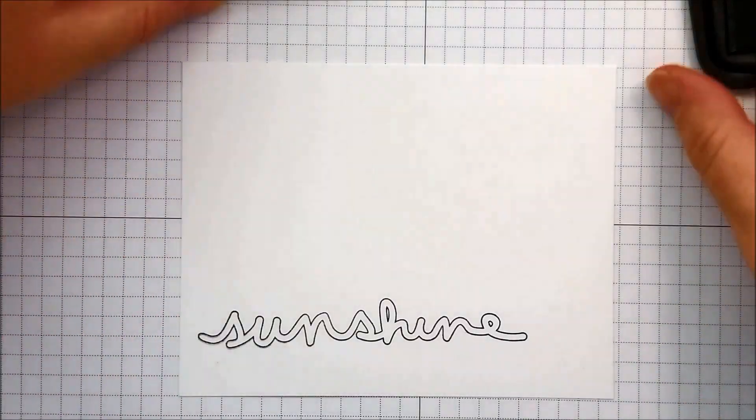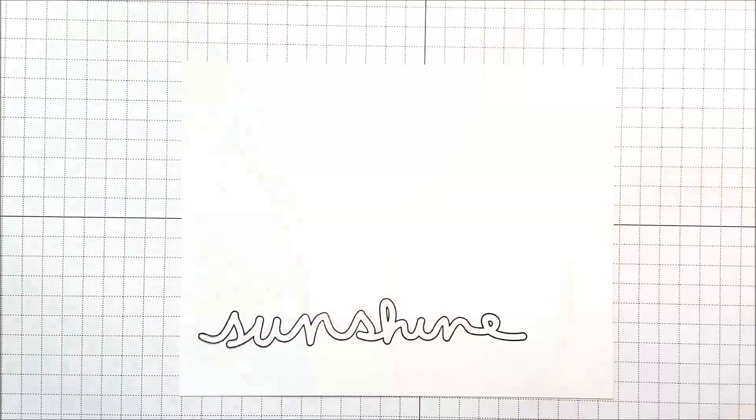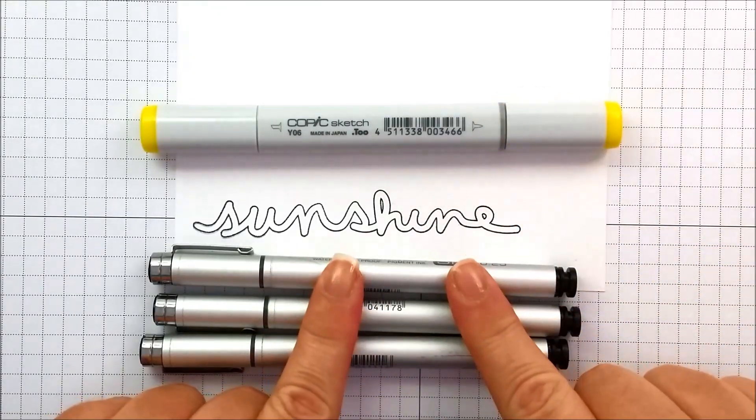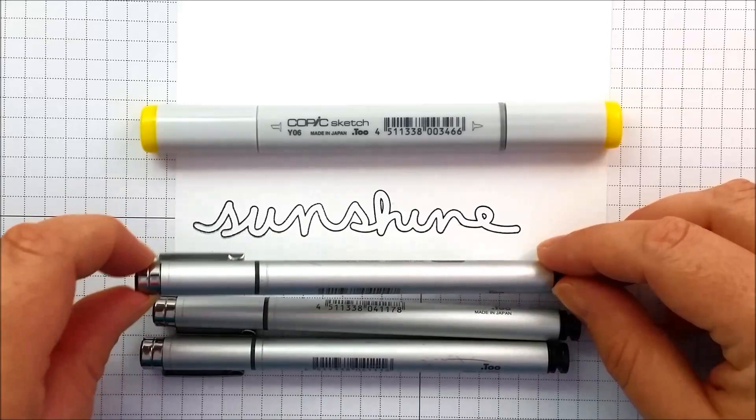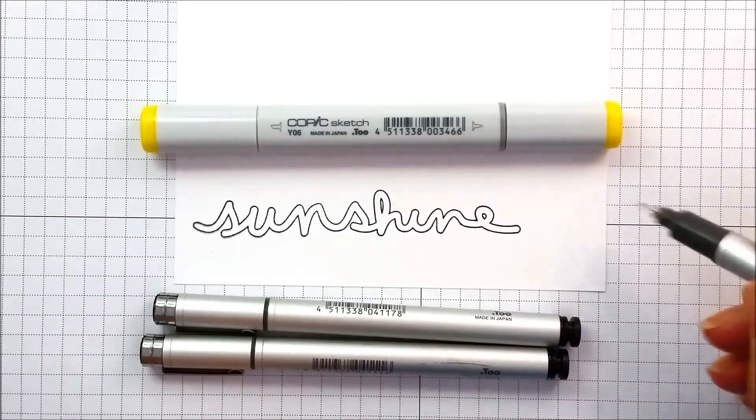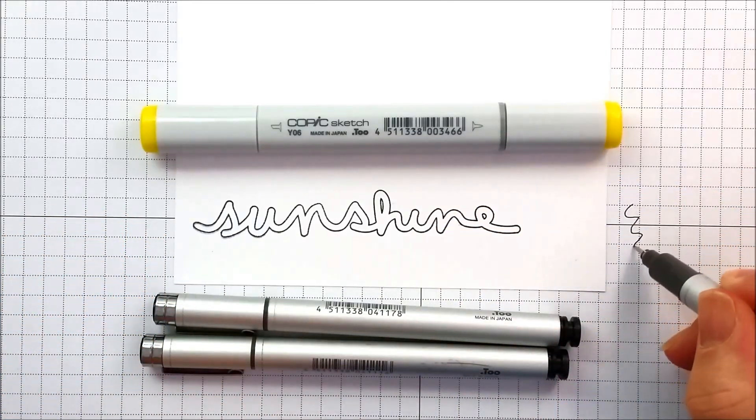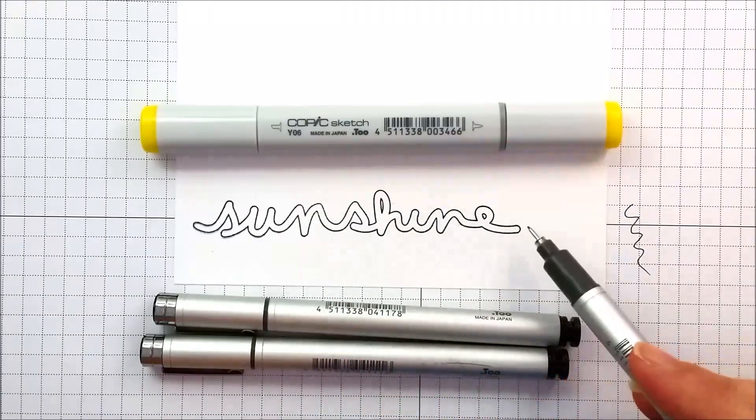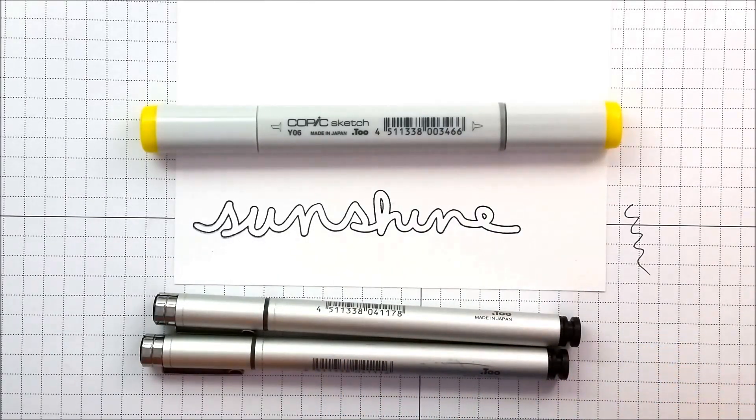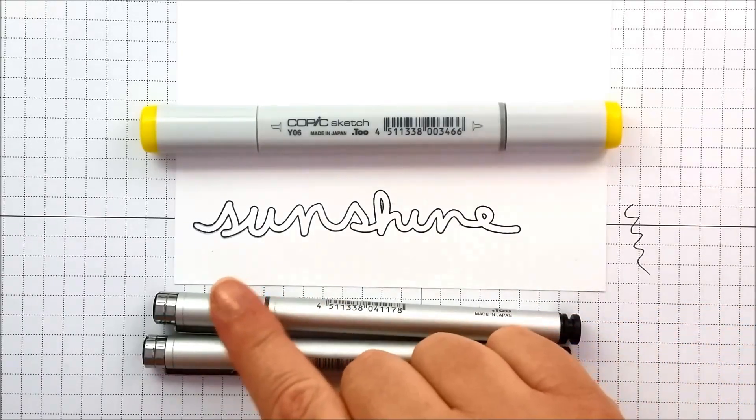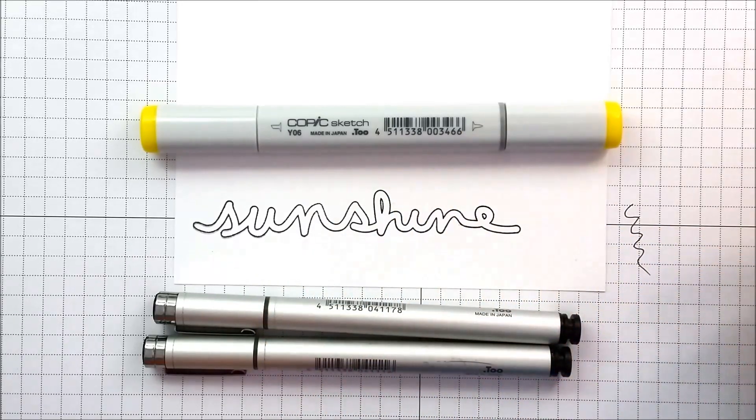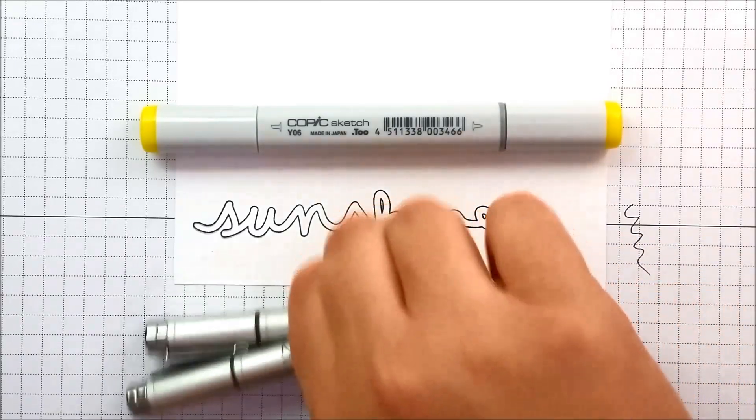Now we're going to have fun with some markers. We're going to color this using some Copic markers. I brought in my multiliners which are basically a fine black tipped pen in different widths and we're going to doodle inside this word and then we're going to color. You can make your stamps look completely different than they already are.